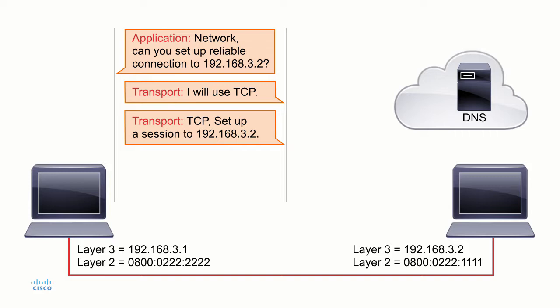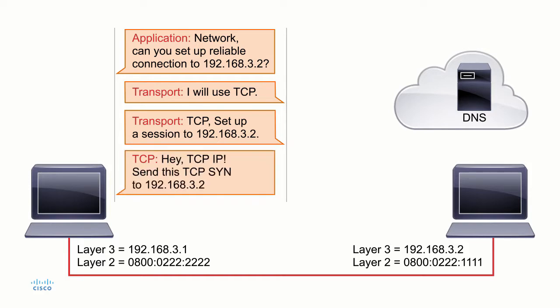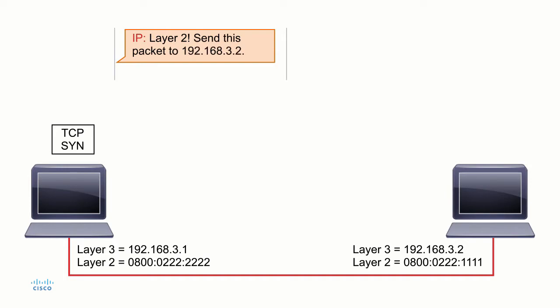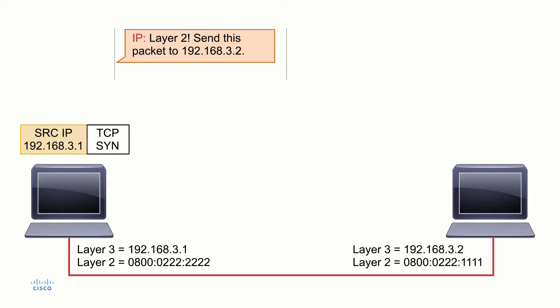The transport layer sets up a TCP session. TCP, if it could speak, would say: hey IP, let's send this TCP SYN to 192.168.3.2. The IP layer — the network layer — says no problem, I'll send that SYN segment to 192.168.3.2. IP needs to pass this down to layer two, and as it does, it adds header information: the source IP address, the destination IP address, and the TCP header passed down from above, which has the SYN flag toggled.